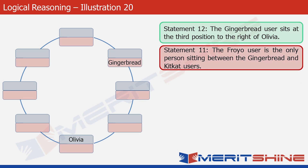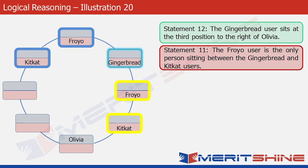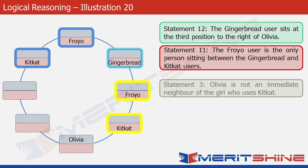Statement 11 tells us that the Froyo user is the only person sitting between the Gingerbread and KitKat users. This is the position of the Gingerbread user. So one possibility for Froyo and KitKat is this — Froyo is between Gingerbread and KitKat. But that's not the only possibility. In another case, the Froyo user is the only one between KitKat and Gingerbread users. So that's also possible. Let's leave it like this and look at statement 3.